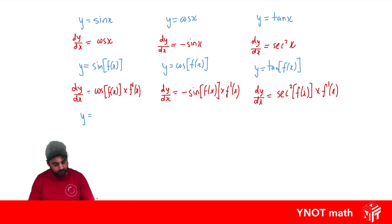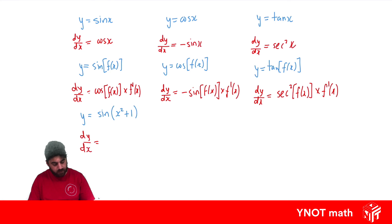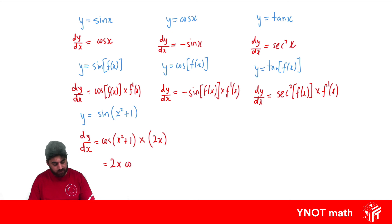Let's have a look at some examples. What if we have y equals sine of x squared plus 1? Well, dy/dx: the derivative of sine is cos, so we get cos of that function. Now we just need to multiply by the derivative of that function. The derivative of x squared plus 1 is just 2x. So we write it as 2x times cos of x squared plus 1.